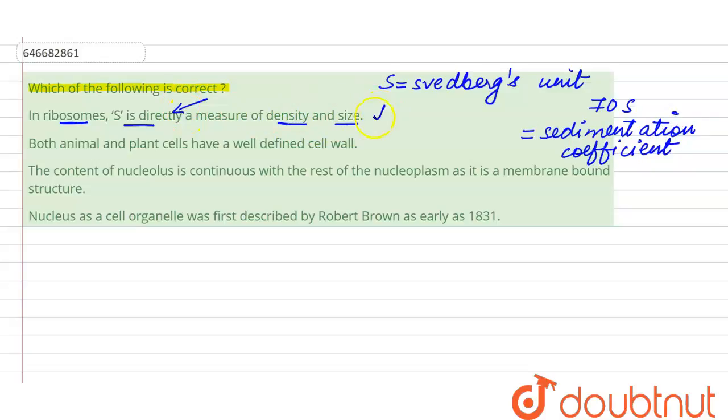The second statement says both animal and plant cells have a well-defined cell wall. However, in animal cells, the cell wall will be absent. So there is no cell wall, making this a false statement.